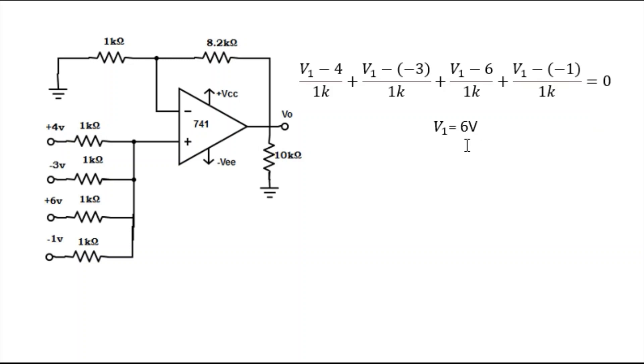So you got it—V1 equals 6 volt. This is your 6 volt potential here. Now due to virtual ground, this 6 volt potential will appear here.